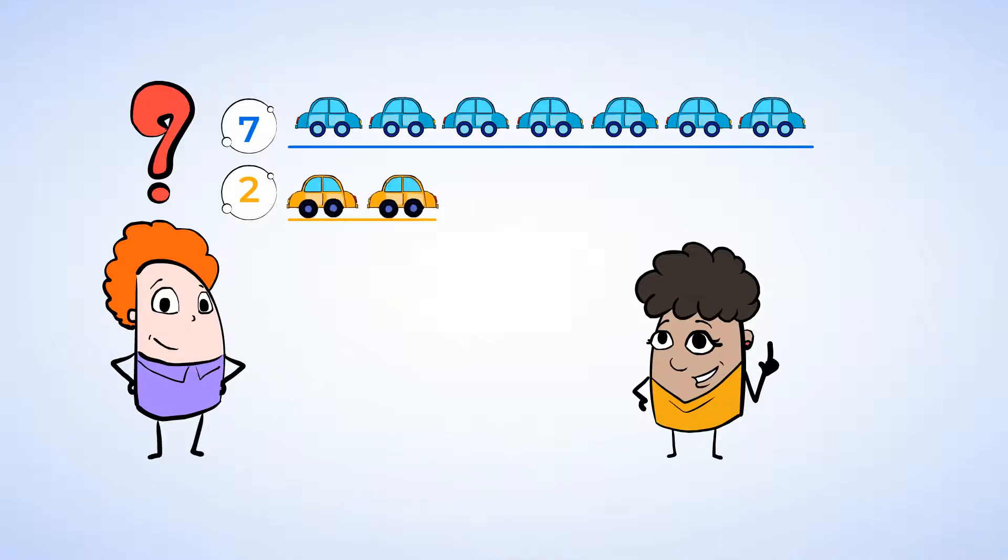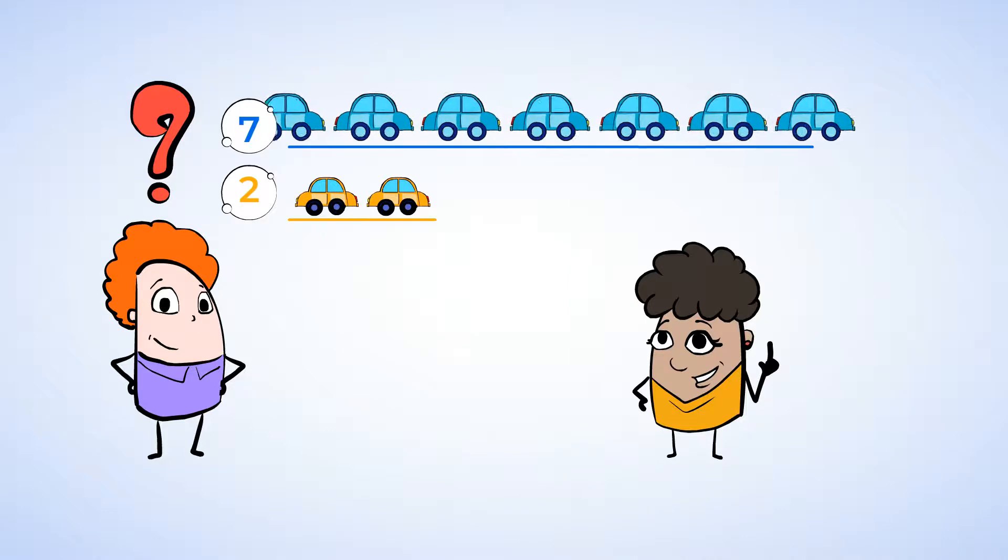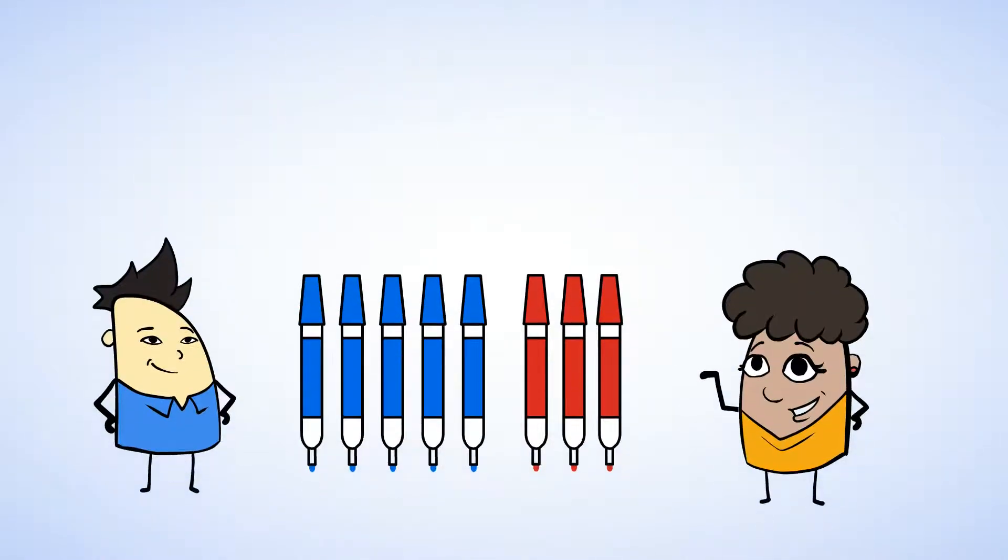Eric's two cars is less than Latifah's seven cars. Oh, Latifah and Chen moved on to drawing now. I wonder, does Latifah have more markers or fewer markers than Chen? Well, just like with the blocks, we can line up the markers to see who has more. Let's look.